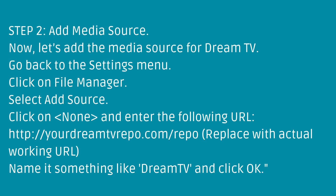Step 2: Add Media Source. Now let's add the media source for DreamTV. Go back to the Settings menu, click on File Manager, select Add Source, click on it and enter the following URL. Name it something like DreamTV and click OK.